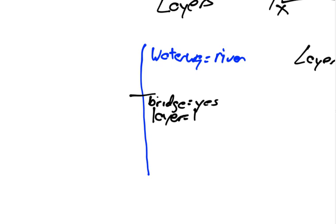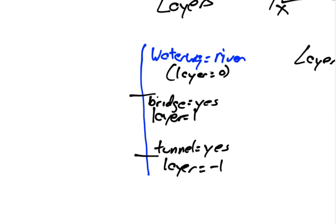Now we could have another part of this river where we had a tunnel, and we would say that would be tunnel equals yes, and layer equals negative one. So here we have three layers that are represented. Our implicit layer zero, we don't have to explicitly say that. We have our one layer for above, and we have our negative one layer for below.